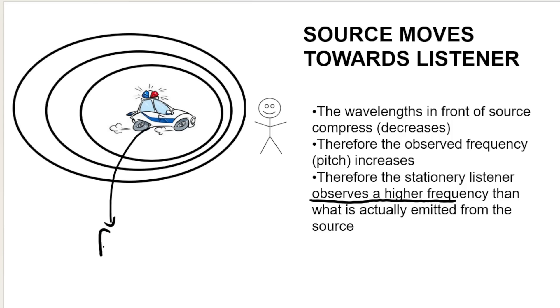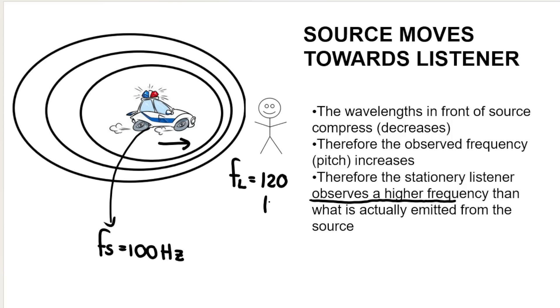That is why the stationary listener observes a higher frequency than what is actually emitted from the source. The frequency of the source could be 100 hertz, but because it's moving towards the listener, the listener will observe a higher frequency — say, 120 hertz for example.